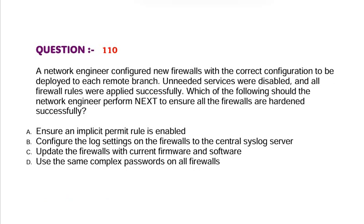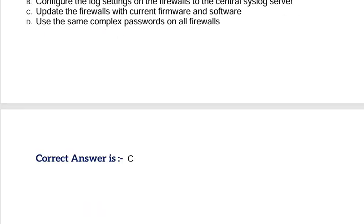Question: A network engineer configured new firewalls with the correct configuration to be deployed to each remote branch. Unneeded services were disabled and all firewall rules were applied successfully. Which of the following should the network engineer perform next to ensure all the firewalls are hardened successfully? Option A, Ensure an implicit permit rule is enabled. Option B, Configure the log settings on the firewalls to the central syslog server. Option C, Update the firewalls with current firmware and software. Option D, Use the same complex passwords on the firewalls. Correct answer is Option C.